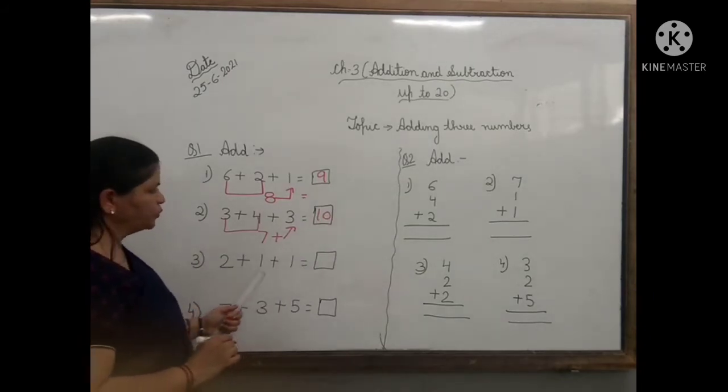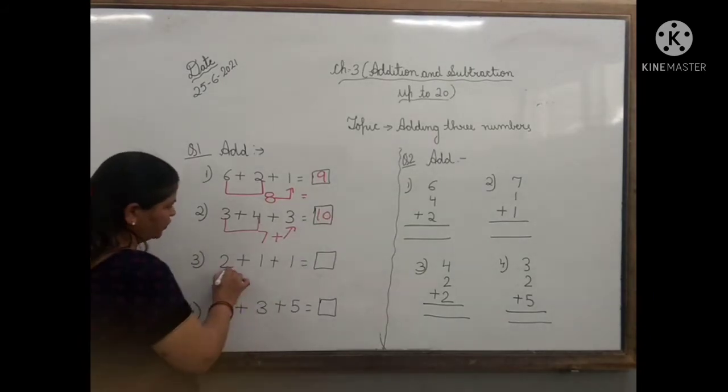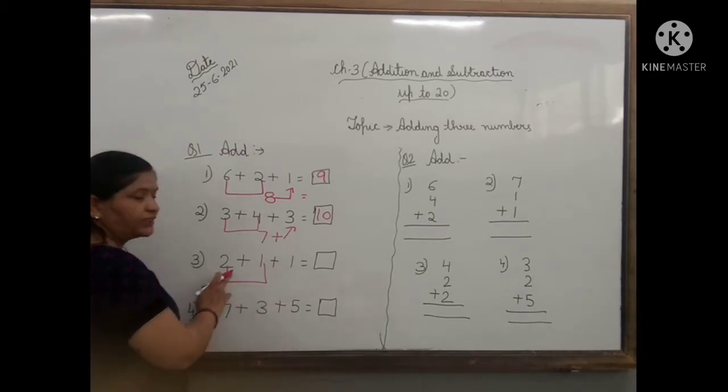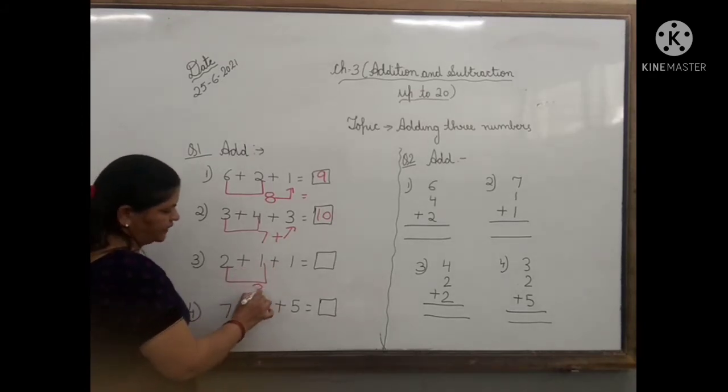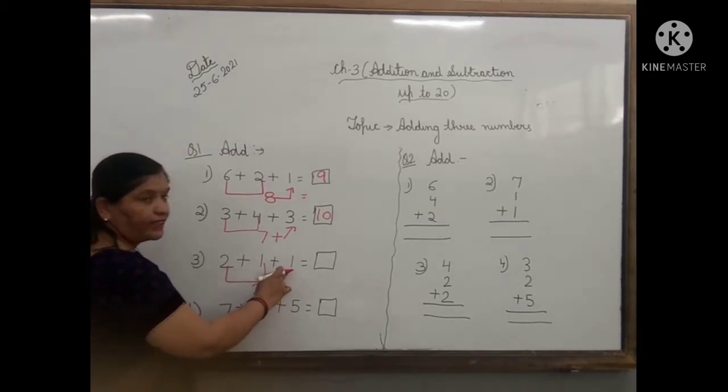Third one, 2 plus 1 plus 1. First you will add the first two numbers, 2 and 1 that is 3. And then you will add the other number, 3 plus 1 that is 4.